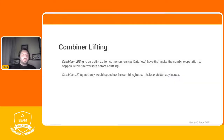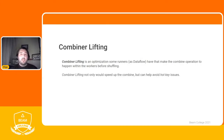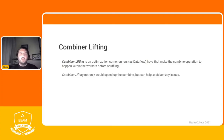One important optimization that happens in some runners like Dataflow is combiner lifting. This makes the combine happen first within each worker itself — a partial aggregation — and then shuffles those partial results for a final combine. This saves time through partial aggregation and avoids issues like hot keys or lazy workers.